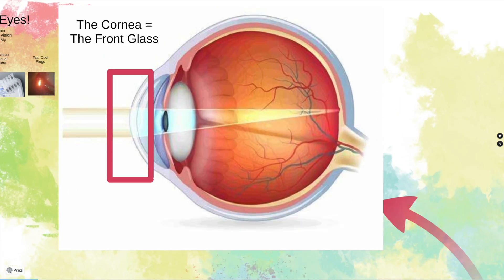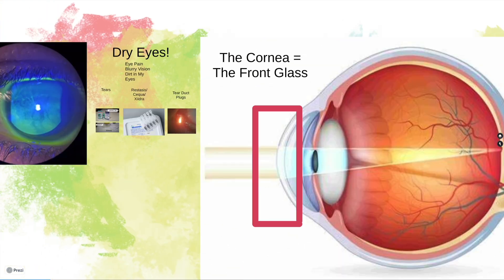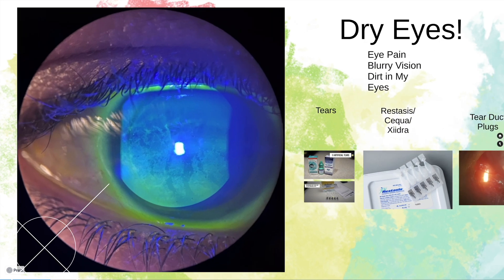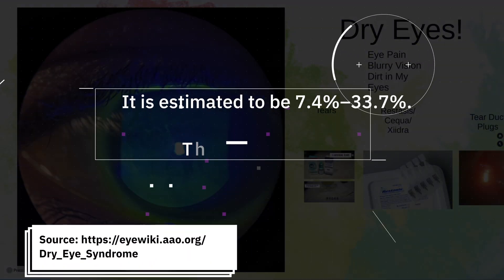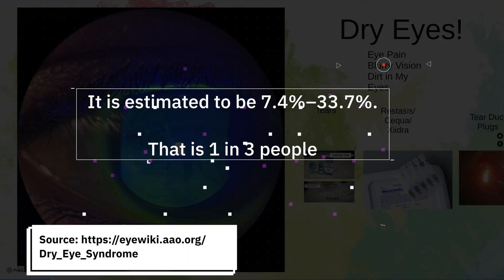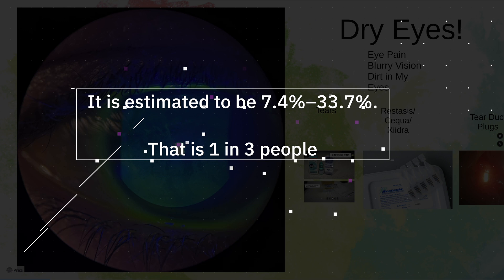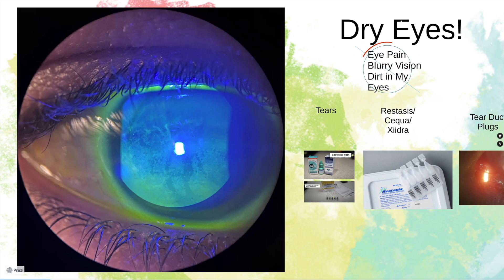Let's now focus on the front glass lens. Dry eyes is a condition that affects millions of Americans every single day. The symptoms of dry eyes include eye pain, blurred vision, or a feeling of dirt in your eyes, which is sometimes called a foreign body sensation.